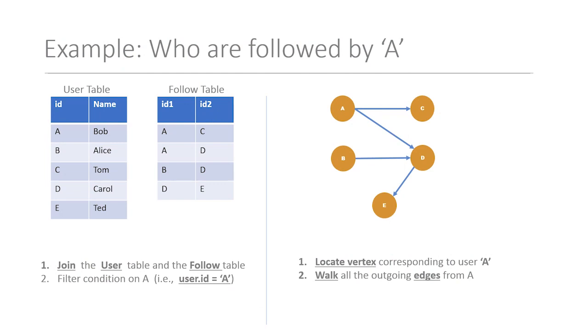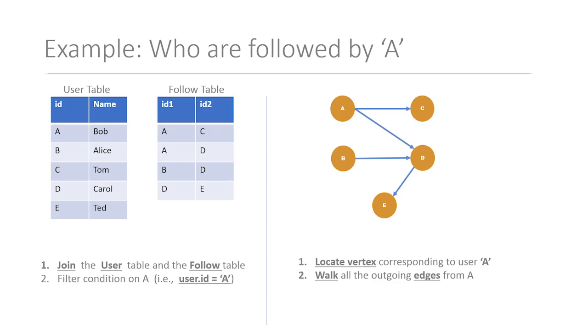In the relational case, there is no way of directly addressing the row corresponding to a user, because in a relational world, tables are the first-class citizens. You always go via the indirection of tables with a filtering condition to identify user A. But in a graph model, vertices are the first-class citizens. You identify the vertex within the graph and then start walking the graph to execute the query. The notion of walking the graph is very important, as it determines the cost and latency of the query depending on how much of the graph you traverse.